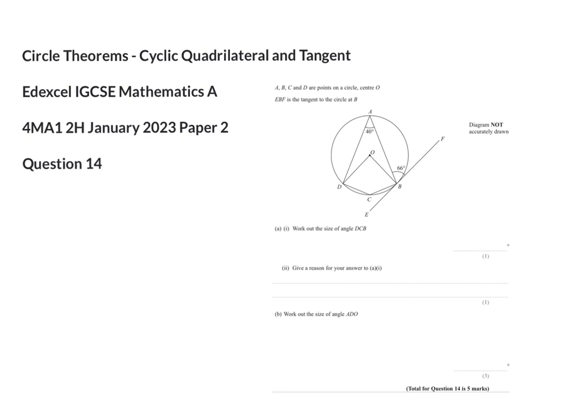Circle theorem questions not only involve finding missing angles, but also will often ask you to provide a reason, and the wording for the reason will be very critical in terms of the mark scheme that the examiners mark against. And in this question, it's a good example where there's only one mark for the reason, so you've got to be really precise in what you actually present.